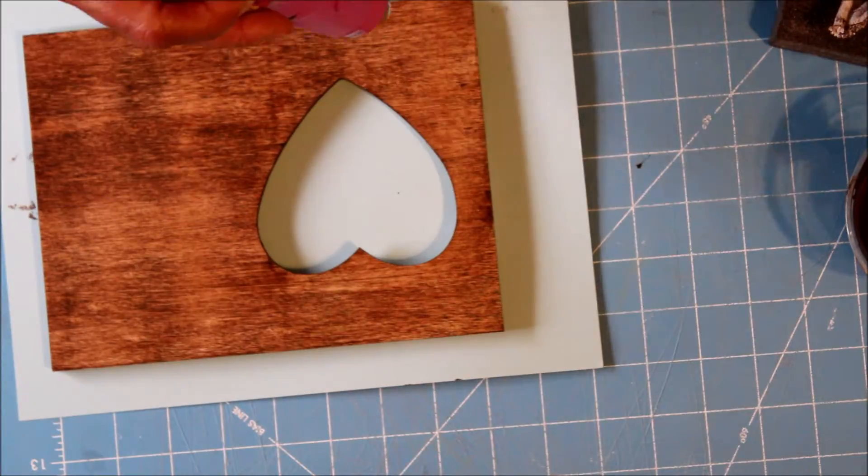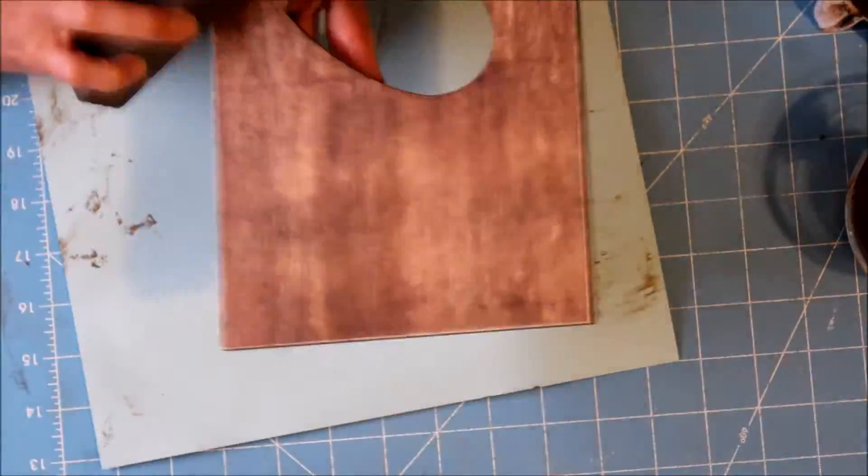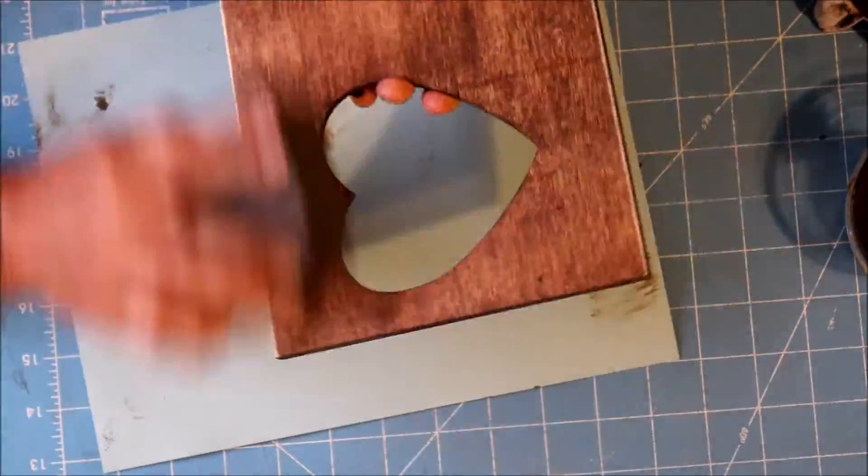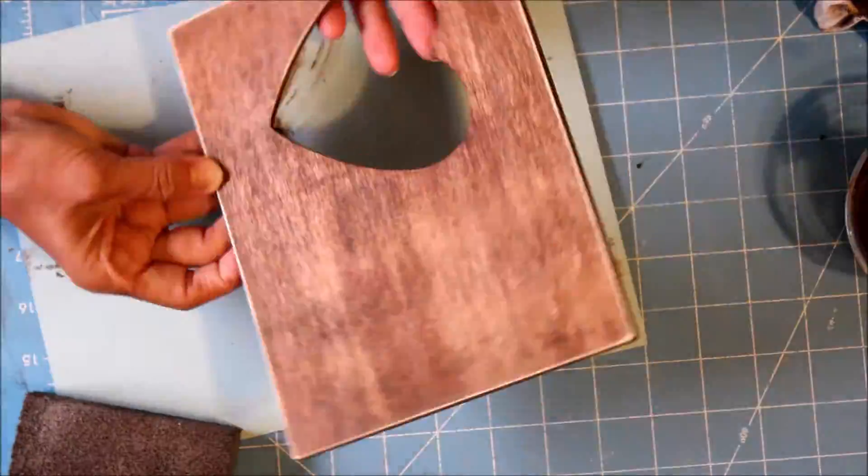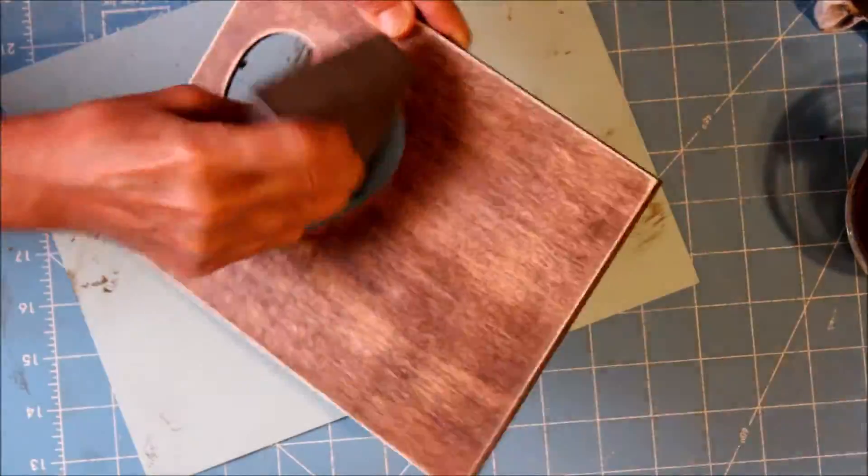Now making sure that it's completely dry, I use my heat gun. I'm also distressing the edges. I want this picture frame to look a little bit more antique, so I'm distressing it a little bit.